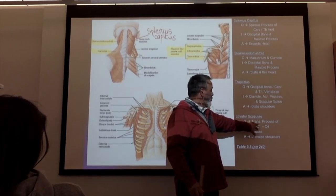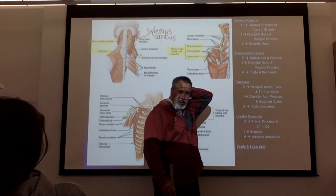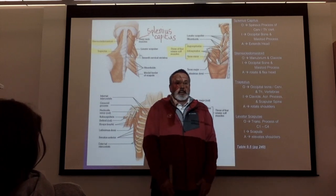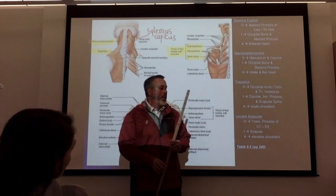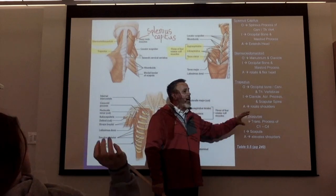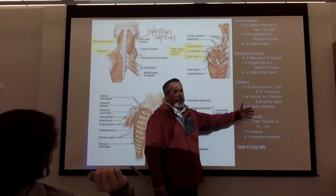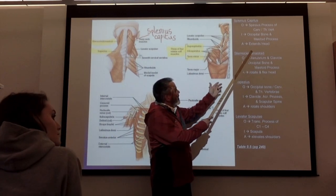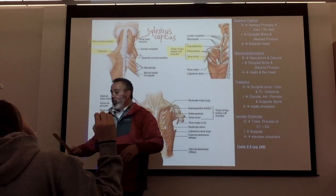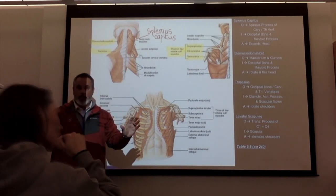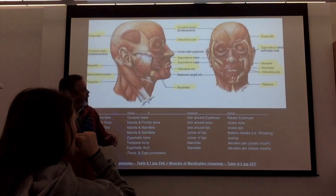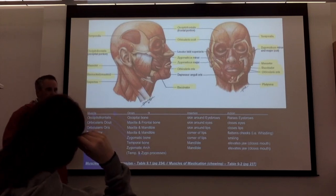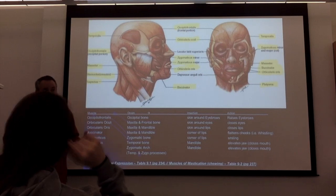Levator scapulae originates from the transverse processes of C1 to C4, kind of up high near your neck. It inserts on the scapula — you don't have to know where exactly. All it does is elevate your scapula — it moves it up. Some muscle names tell you what they do; for example, levator scapulae pretty much tells you. We've covered 11 of the 47 muscles you need to know — almost a quarter done.